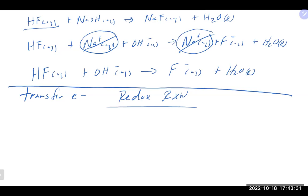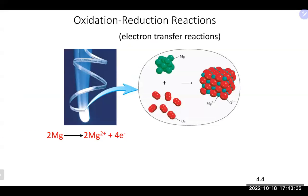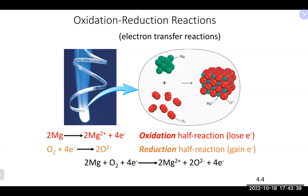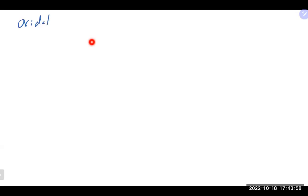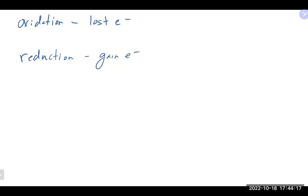Redox reactions are oxidation-reduction reactions, shortened to 'redox.' Oxidation is when a substance loses electrons. Reduction is when a substance gains electrons. A mnemonic to remember this: 'Leo the Lion goes grr' — Loss of Electrons, Oxidation; Gain of Electrons, Reduction. Another mnemonic is OIL RIG: Oxidizing Is Losing, Reducing Is Gaining.